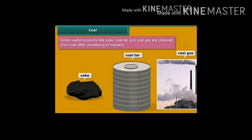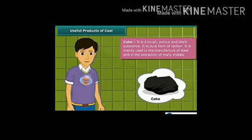While obtaining coal, some by-products are also formed that are very useful. These are coke, coal tar and coal gas. Firstly, coke is a hard, dry fuel produced by heating bituminous coal to a very high temperature in the absence of air. Coke has a high carbon content and is used as a fuel in steel manufacturing.